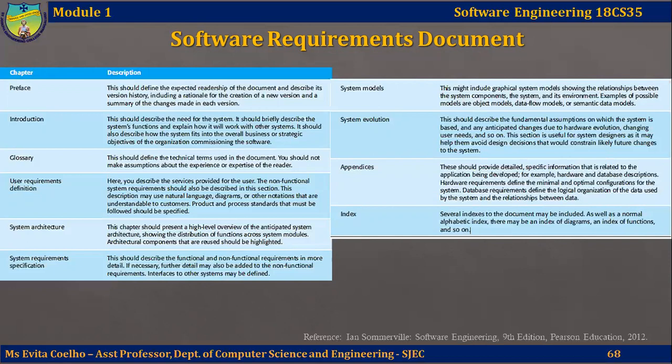This is followed by the system requirement specification, which describes the functional and non-functional requirements of the system in more detail and can be used by the developer to implement the system. Next comes the system models chapter, which includes graphical system models showing the relationship between various system components, the system, and its environment. This is followed by the system evolution chapter, which describes the fundamental assumptions on which the system is based and documents any anticipated changes due to evolution of software, hardware, user needs, and so on.